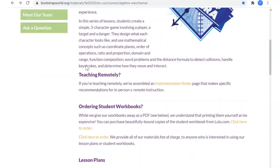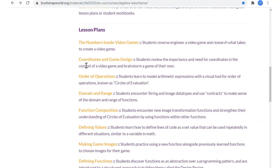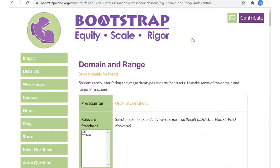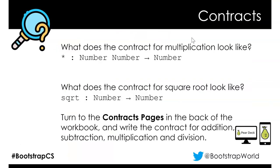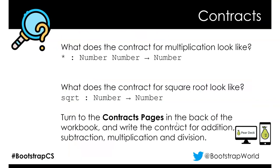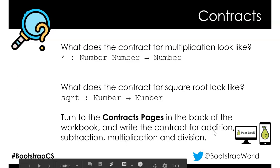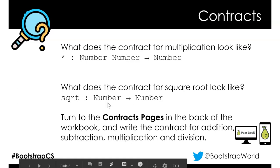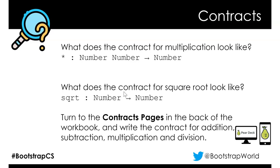Now pause and go to the contracts page and write the contracts for addition, subtraction, multiplication, and division. Here are some examples so you remember what you need to put in there. Go ahead and pause now and do this.